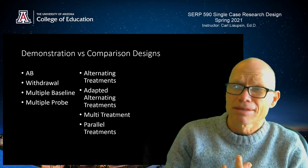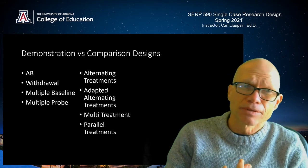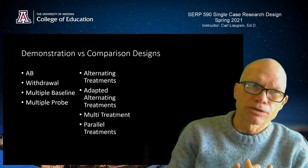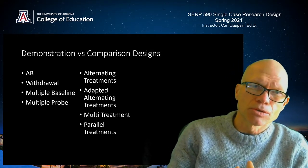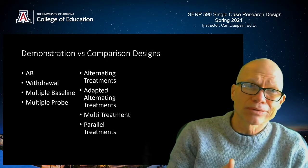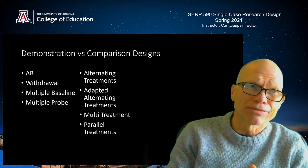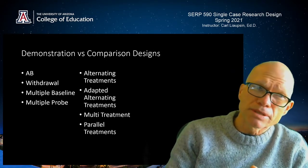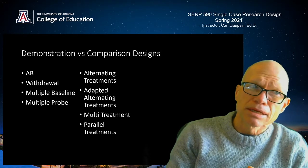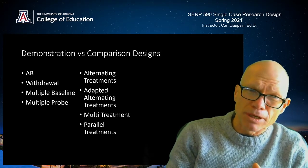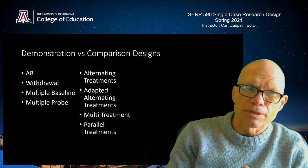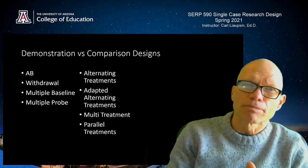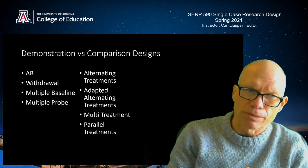The types of comparison designs described in the book and used most often — even though it's not done very often — are alternating treatments designs, adapted alternating treatments, multi-treatment designs, and parallel treatments.